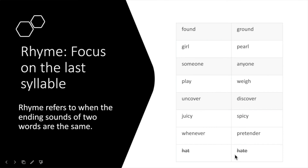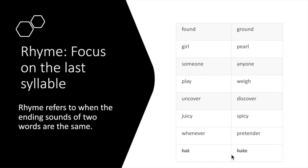This last one is crossed out because it does not rhyme. Hat and hate — "at" and "ate" do not sound the same. So even though these two words look alike, they do not rhyme. However, they have the same beginning sound, so you could say that these two make alliteration.